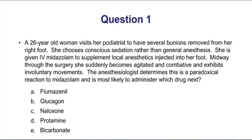A 26-year-old woman visits her podiatrist to have several bunions removed from her right foot. She chooses conscious sedation and is given IV midazolam along with local anesthetics. Partway through the surgery, she becomes agitated and combative and exhibits involuntary movements — a paradoxical reaction to midazolam. Since midazolam is a benzodiazepine, we would use a benzodiazepine receptor blocker. The drug that blocks BZ1 and BZ2 receptors is choice A, flumazenil.